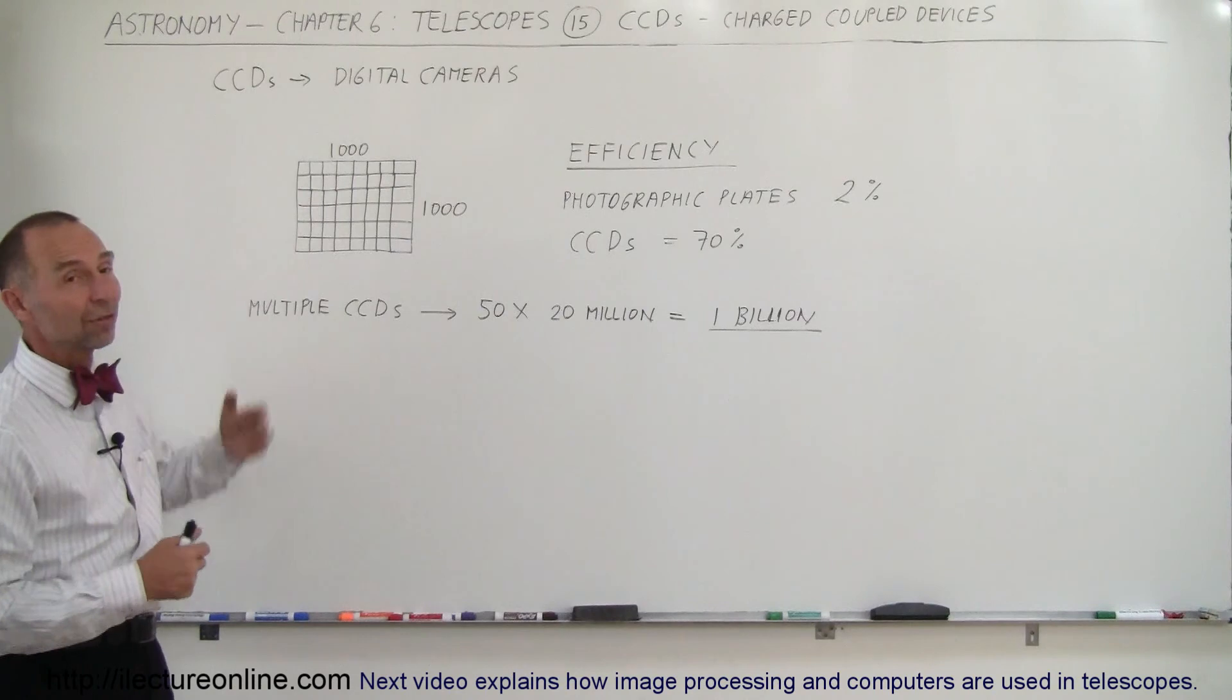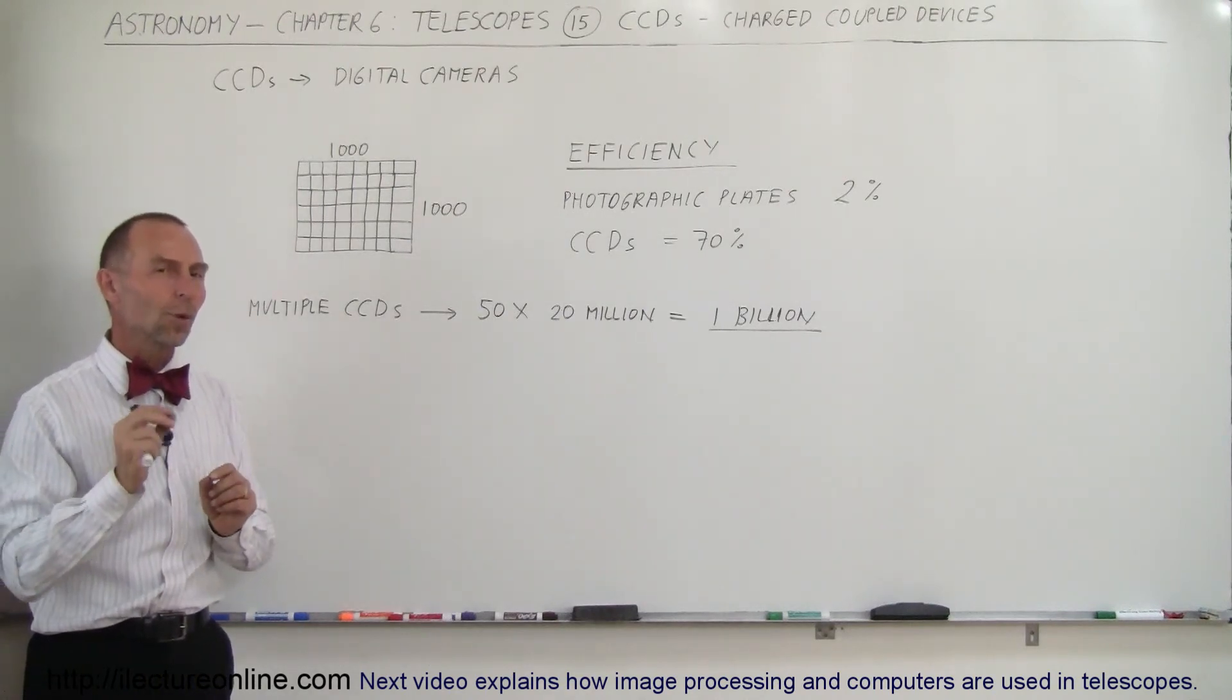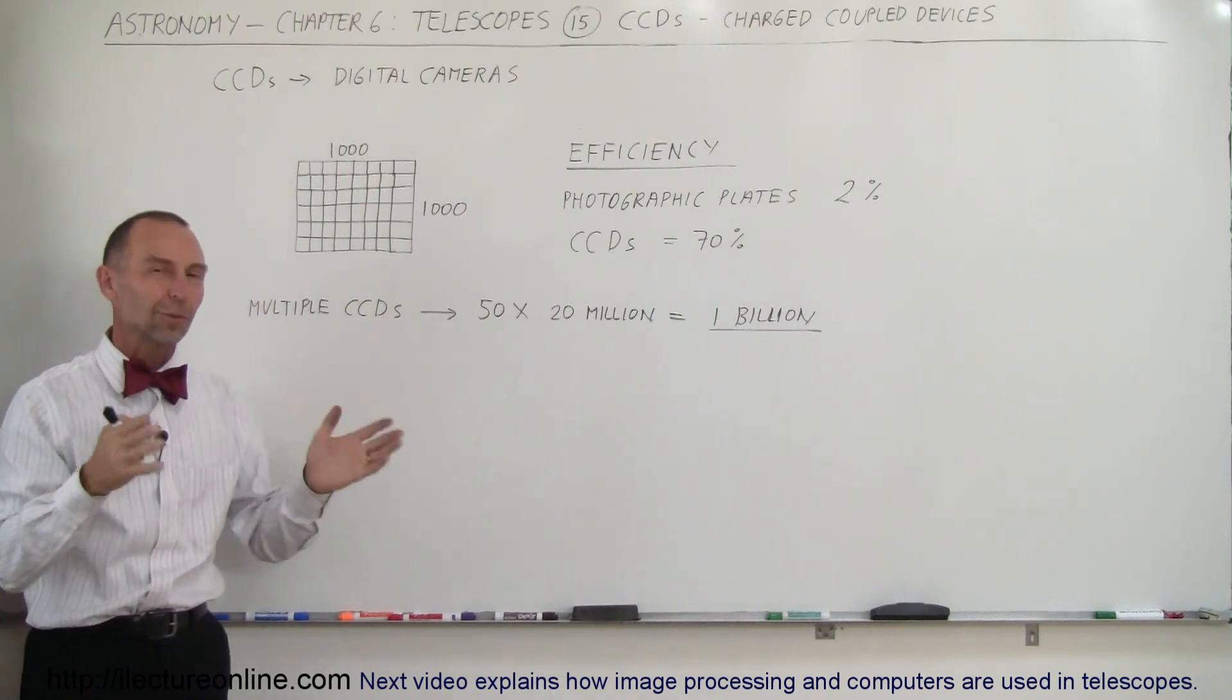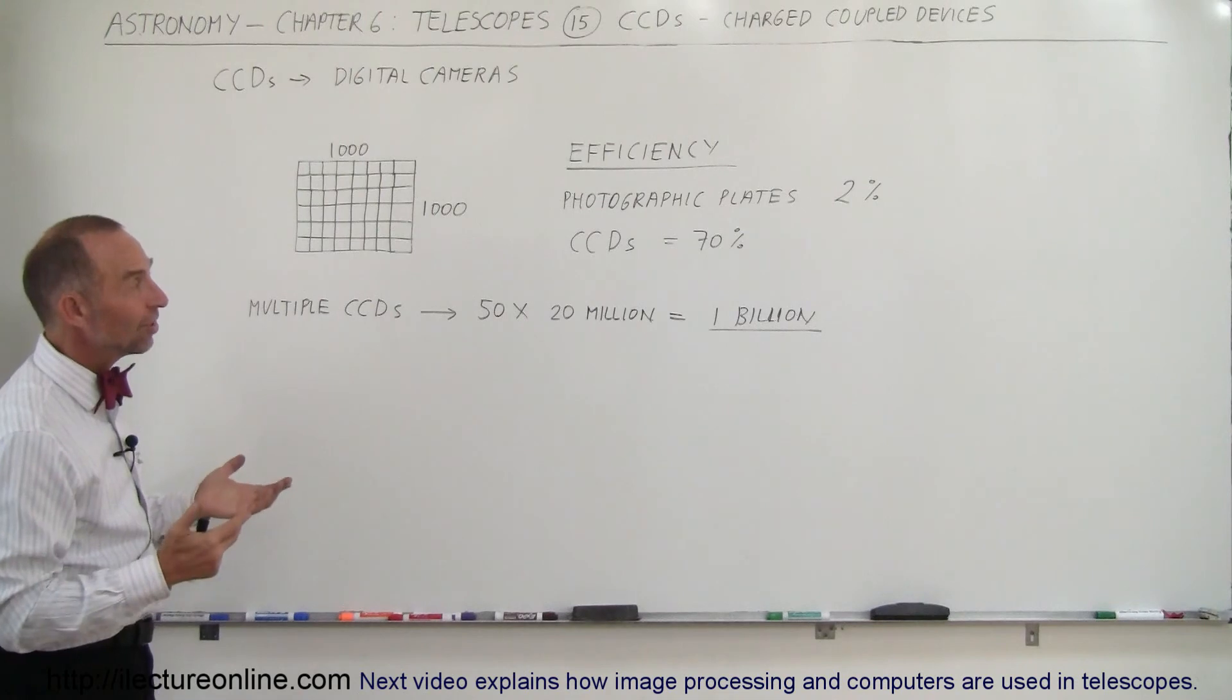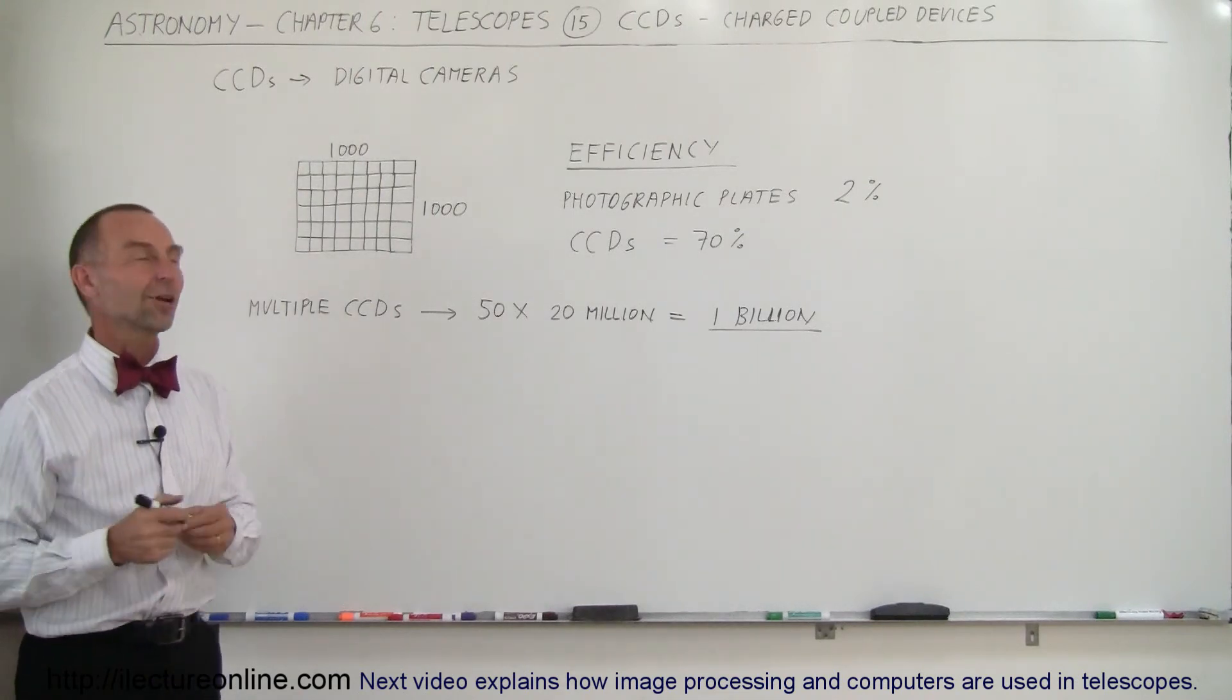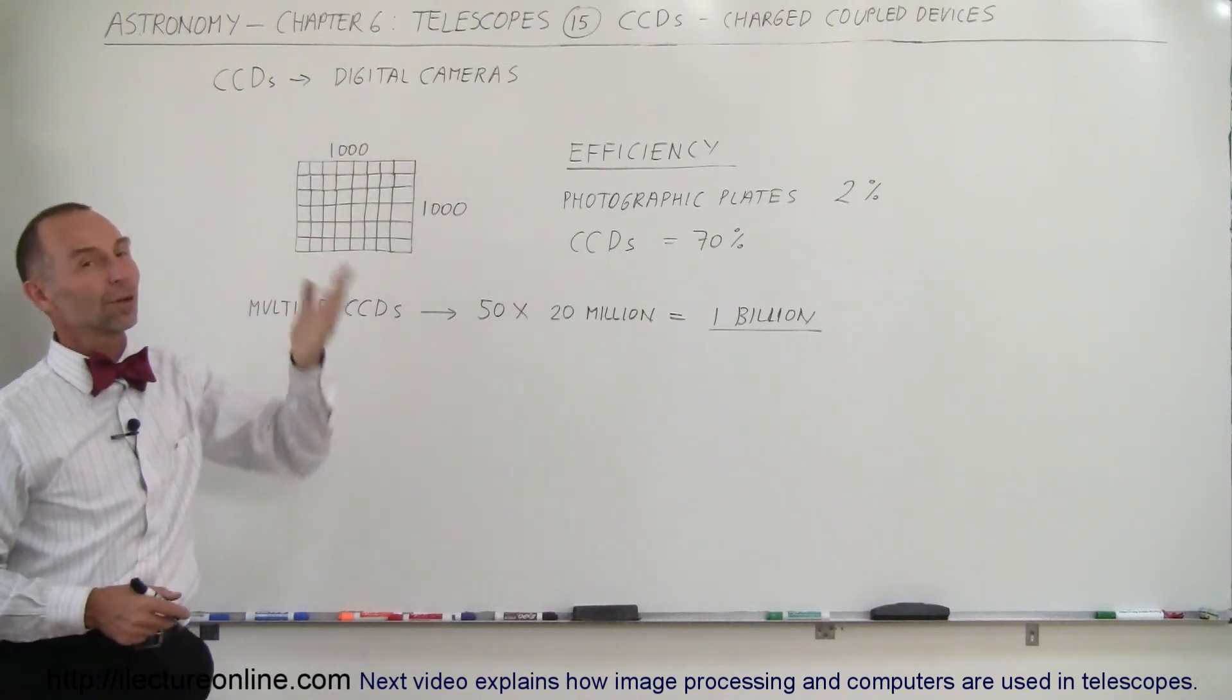There's no limit as to how powerful we can make these CCDs, and it allows us to do one additional thing: we can actually do very nice image processing on these, which I will show you in the next video. CCDs, something that we don't hear typically outside the astronomical world, but we call them digital cameras and everybody knows what a digital camera is.